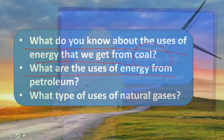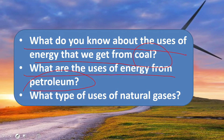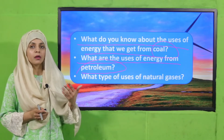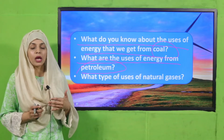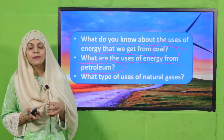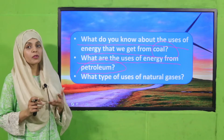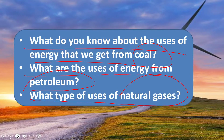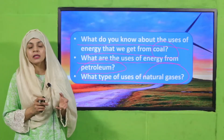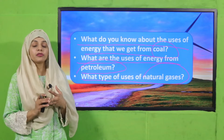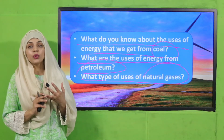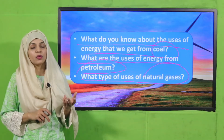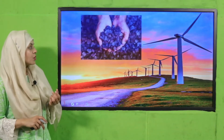What are the uses of energy that we get from petroleum? It helps to run vehicles as fuel — for cars and motorbikes — and it is also used to generate electricity. What are the uses of natural gas? It is used in vehicles, in generation of electricity, and it is also used in cooking and homes, in stoves. So coal, natural gas and petroleum are all important energy sources.